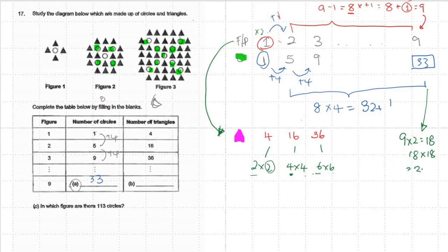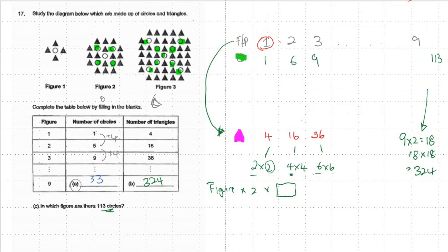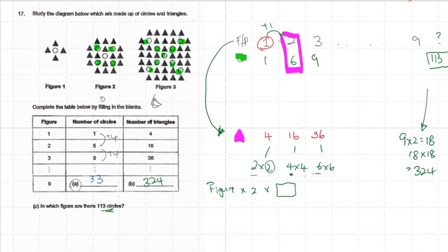18 times 18 gives 324. That is the pattern — figure times two, then square the same number. Now it's asking: if the circle count is 113, what is the pattern number? Using the same principle: every time circles add four, and figures add one. I want to know what pattern number gives 113. So I work backwards: 113 minus one equals 112.